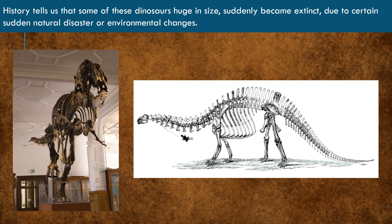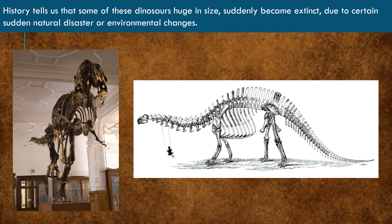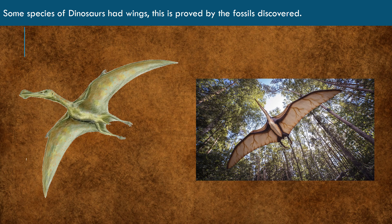History tells us that some of these dinosaurs suddenly became extinct due to some sudden natural disaster or environmental changes such as volcanic eruption, freezing cold, diseases, etc. Fossils of dinosaurs with wings have been discovered. It is believed that some species of two-legged and winged dinosaurs evolved into birds.